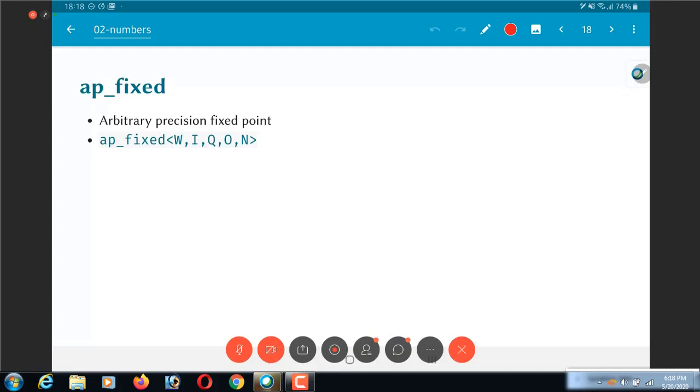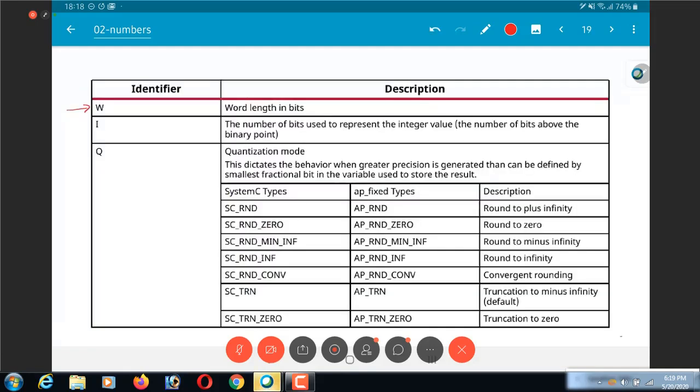It effectively says that I can declare a data type and say that it is of type AP_fixed, WI and a few other parameters of which the W is the total width and I is the number of integer bits.